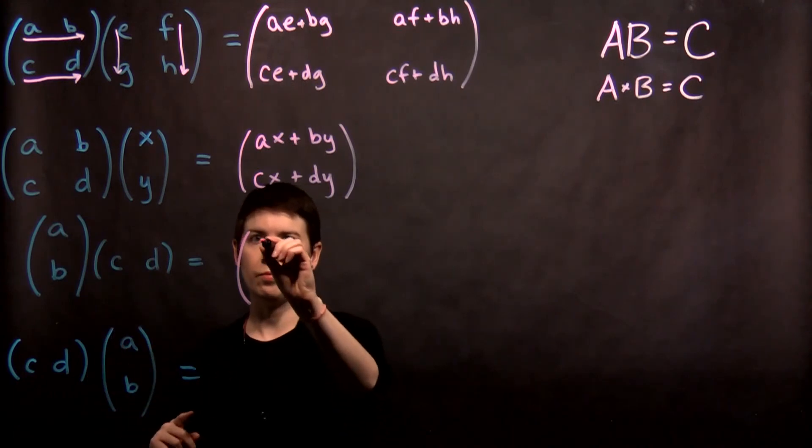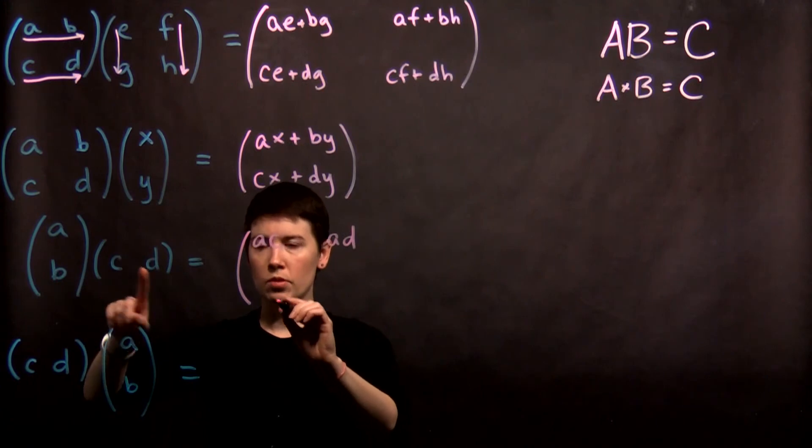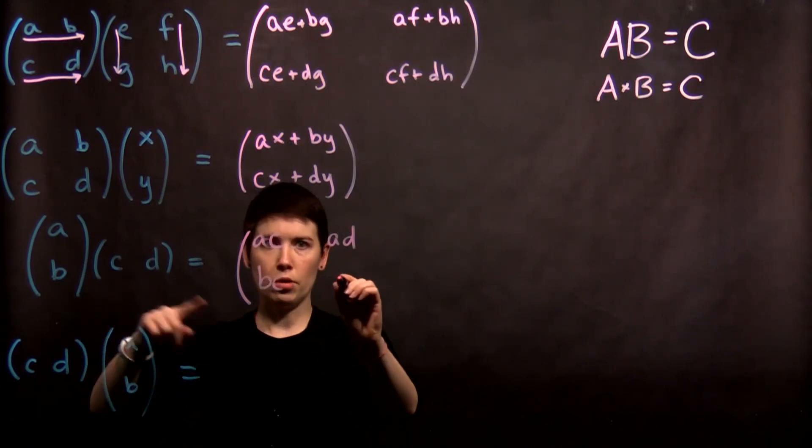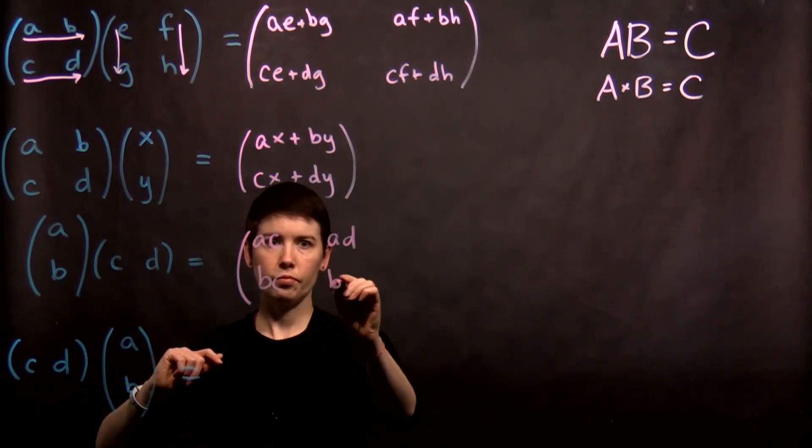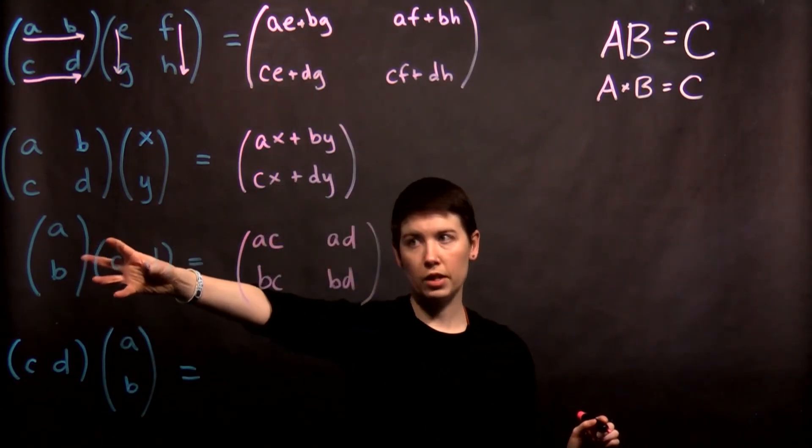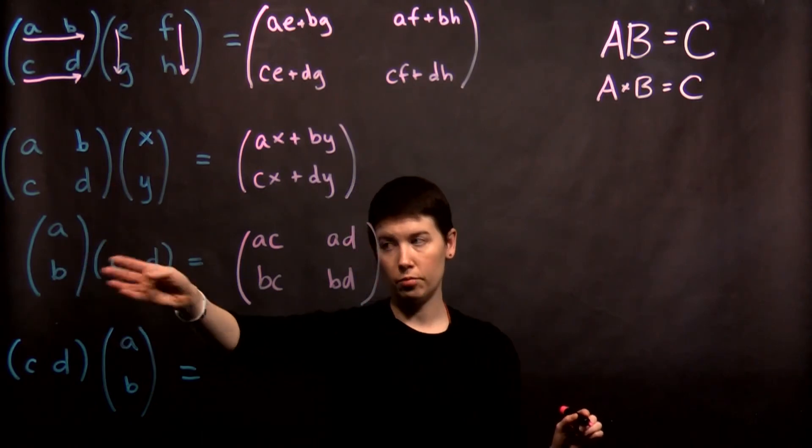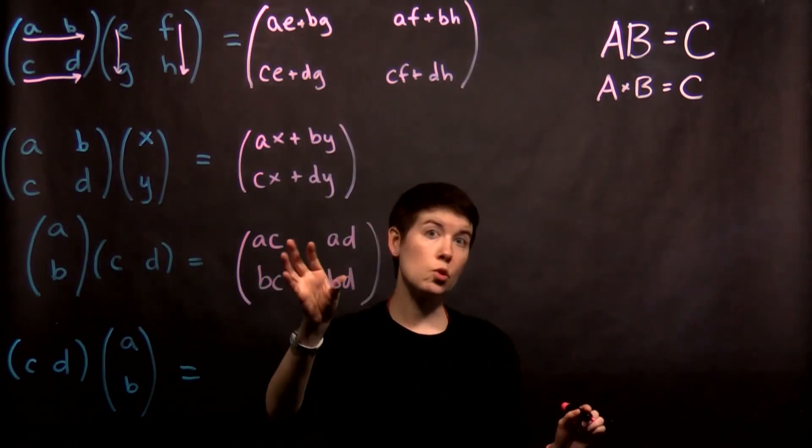So what happens here is that each entry is row times column: AC, AD, BC, and BD. So when you multiply two vectors where it's first a column vector by a row vector, you actually get back a two by two matrix.